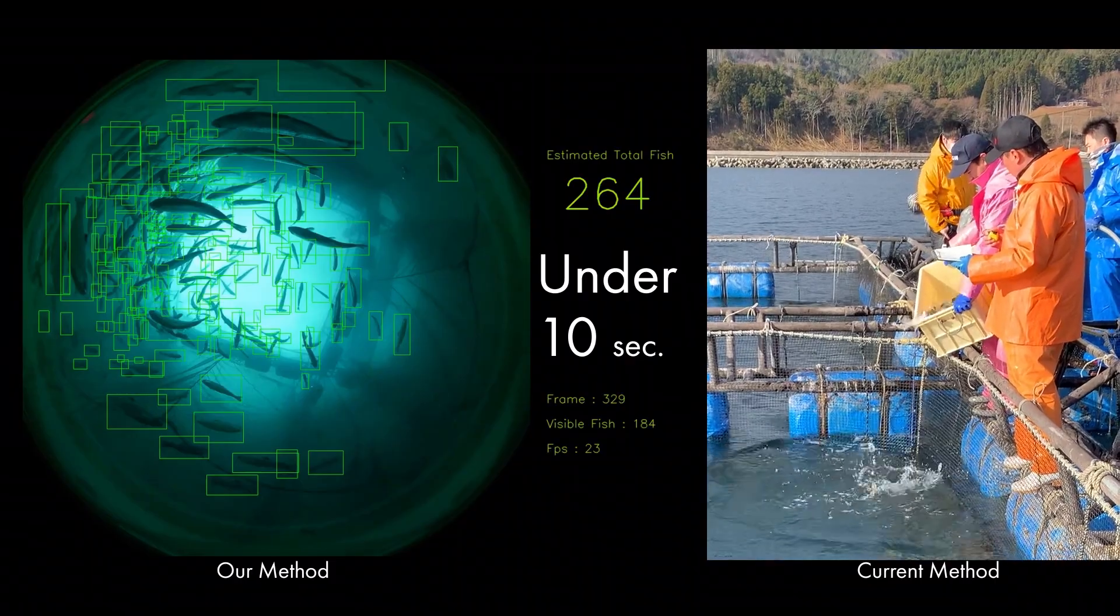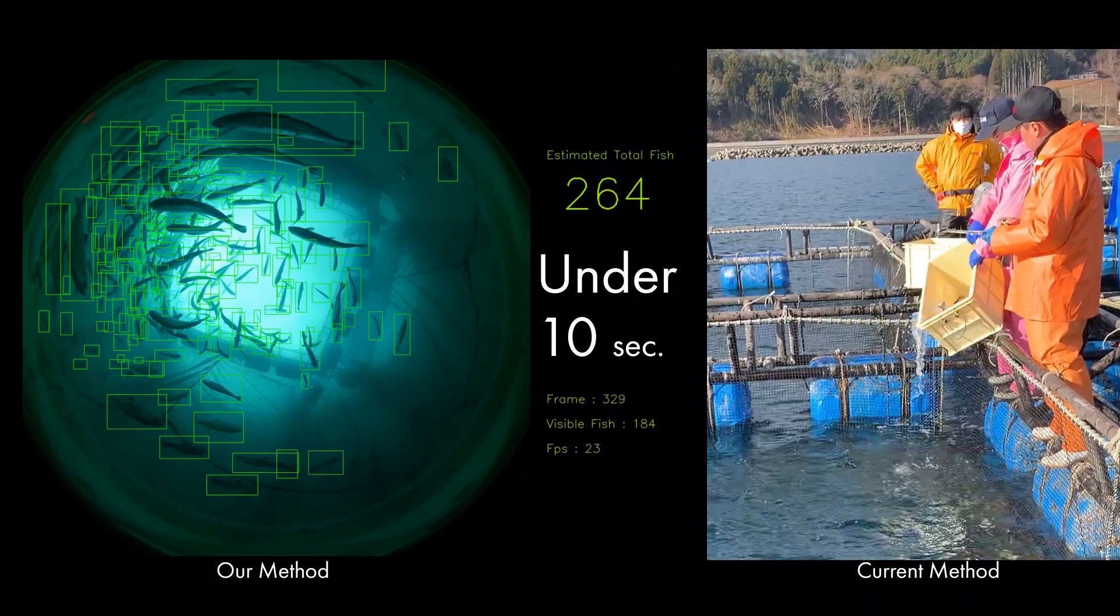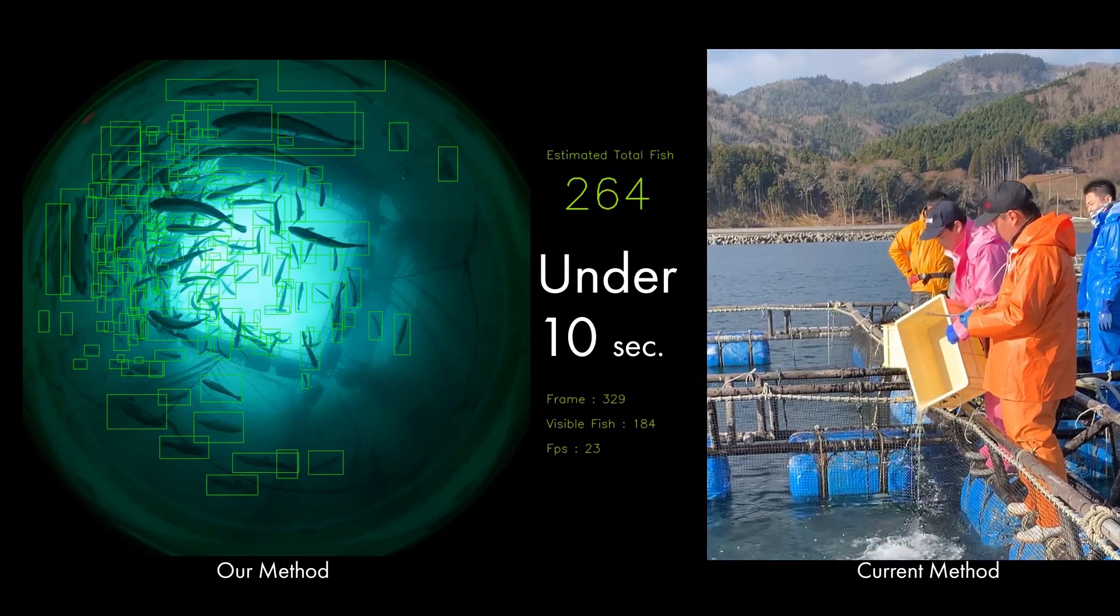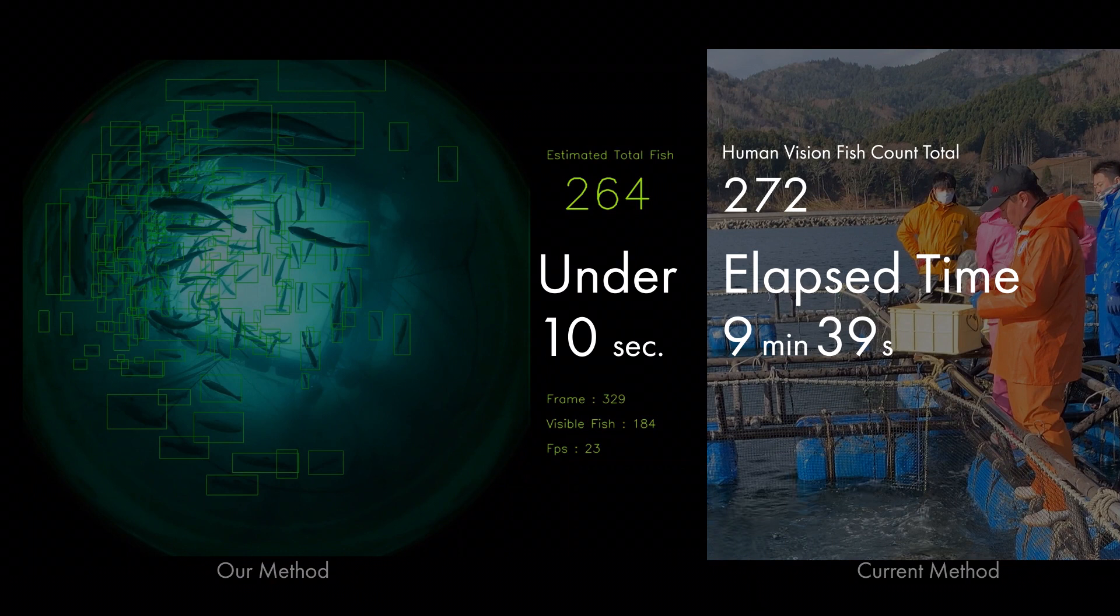With the conventional method in a fish farm, the fish must be handled, and the count took 9 minutes and 39 seconds. The estimated count using human vision was 272, while the one using our fish counting system was 264.